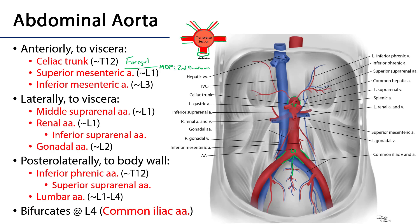The next major branch is the superior mesenteric artery, at the level of L1. The superior mesenteric artery is going to serve the derivatives of the embryonic midgut with blood. That would be the distal duodenum through to the proximal colon, or large intestine, with the transitional point at about two-thirds of the way along the transverse colon.